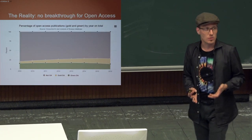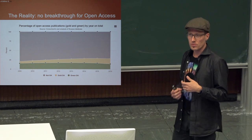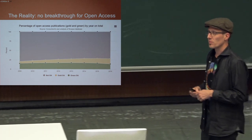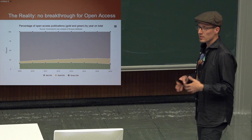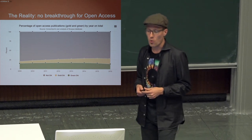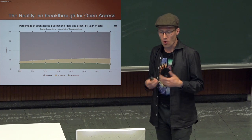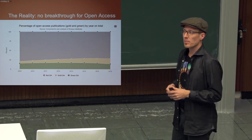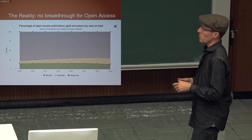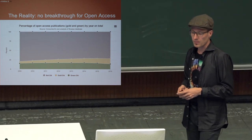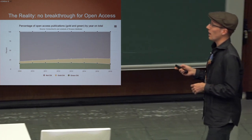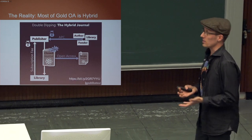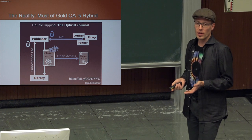So why do we have Plan S? Why this rather radical mandate to achieve more openness? Open access has been growing for many years, but we're still nowhere near the target of having all scientific research openly available — roughly in the range of one quarter to one third, depending on field and country. And an additional problem is that a lot of this open access growth is coming from the gold open access route, not just from pure open access journals, but through the so-called hybrid model.